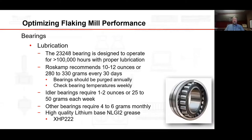The roll bearings require lubrication. We use the 232-48 bearings that have an L-10 life in excess of 100,000 hours with proper lubrication. We recommend 10 to 12 ounces of grease be added every 30 days. The bearings should be purged annually. Check bearing temperatures weekly. Idler bearings require 1 to 2 ounces every week. Other bearings, such as the feed gate, require 4 to 6 grams monthly.